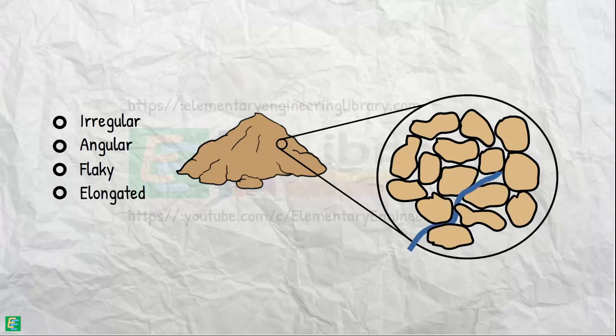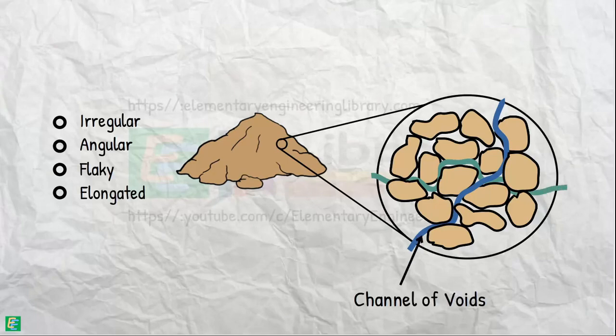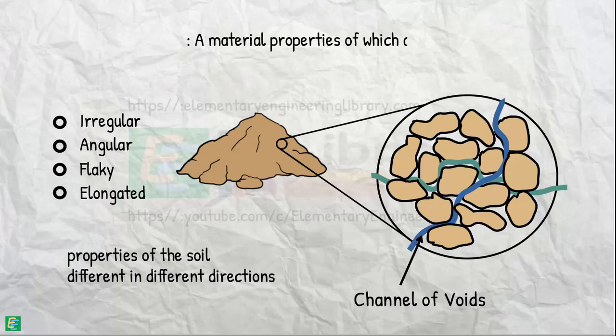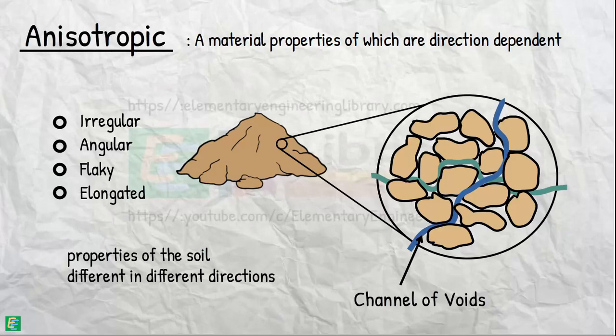Hence, they enclose irregular channels of voids in different directions causing the property of soil different in different directions. A material whose properties are dependent on the direction is referred to as anisotropic.